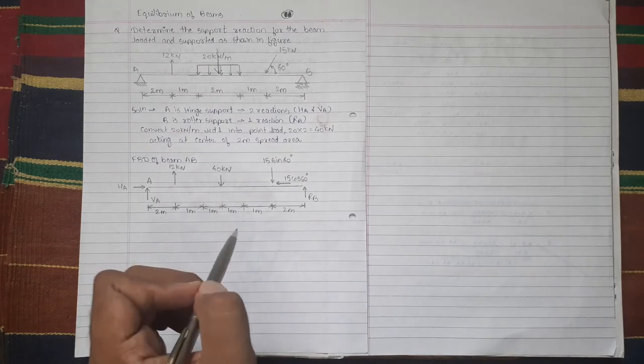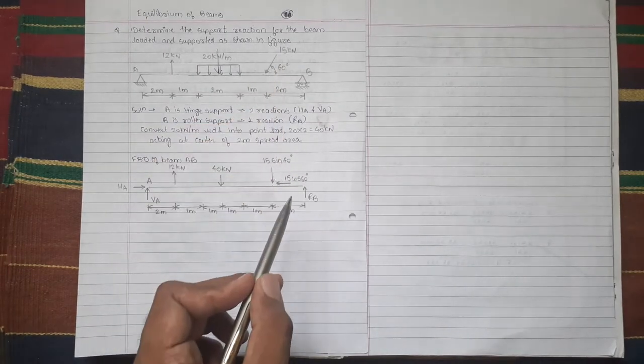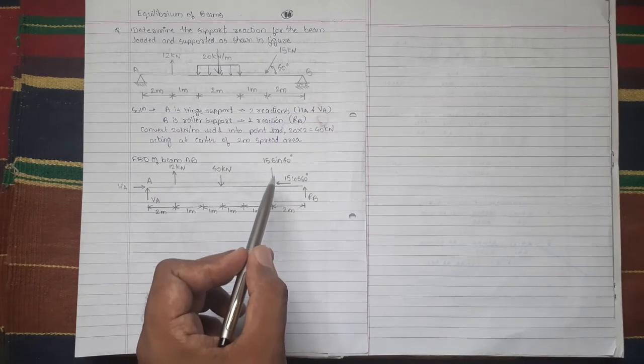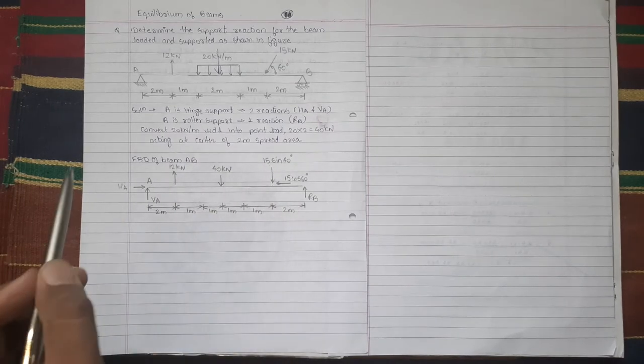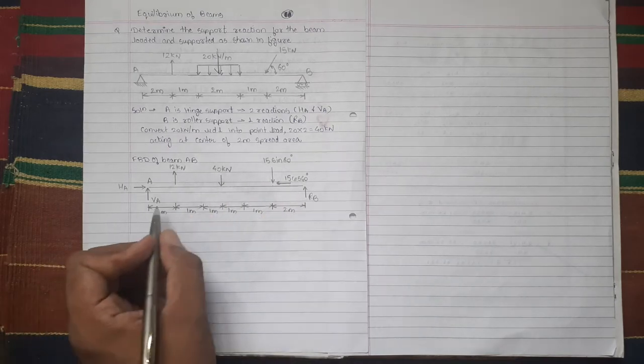Here inclined force 15 kN is resolved into its components 15 cos 60 and 15 sin 60. In order to find out reactions at A and B, apply conditions of equilibrium.